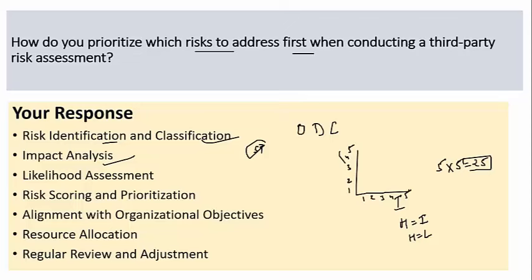I also ensure prioritization aligns with the organization's strategic objectives and risk appetite — terms that signal familiarity with enterprise risk management. Risk appetite is the level of risk an organization is willing to take on a project. For instance, if an organization is sensitive to regulatory compliance risk, non-compliance risks would receive higher priority. Based on identified risks, I allocate the resources required, sometimes using cross-functional teams to address high-priority risks and implement quick wins to reduce exposure.